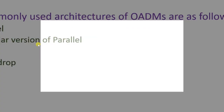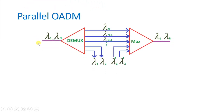Let us look at the first type — parallel OADM. In parallel OADM we have lambda 1 to lambda n number of wavelengths coming in and lambda 1 to lambda n going out. These wavelengths are separated by a demultiplexer, which separates out all wavelengths from lambda 1 to lambda n. In this case we are dropping lambda 1 and lambda 2 wavelengths and adding lambda 1 dash and lambda 2 dash wavelengths, which are then given to a multiplexer that combines all wavelengths back onto the fiber.